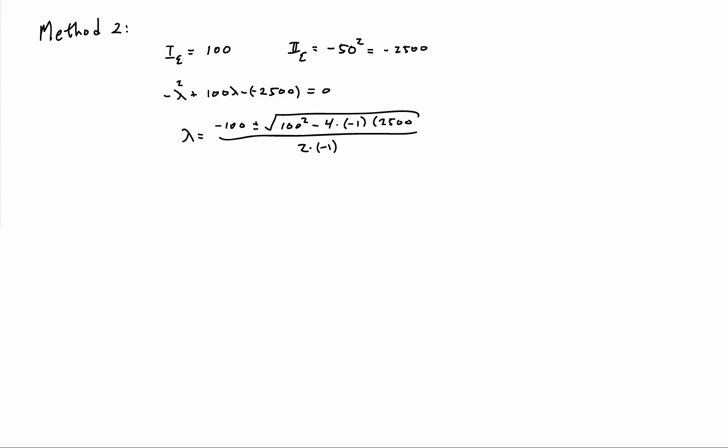And we can use the quadratic formula, then, to determine the two eigenvalues, which are the principal values. And so we end up with 50 times 1 minus and plus the square root of 2. And that's exactly the same result that we had before.